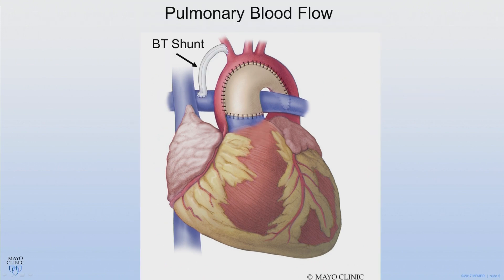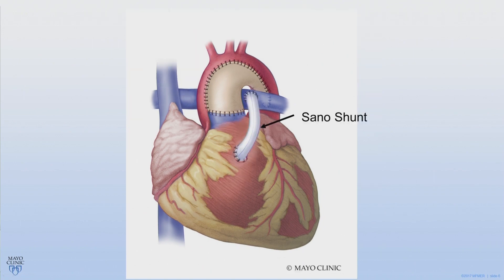This is done with one of two shunts. Shown here is a BT shunt, in which the pulmonary arteries receive blood from the aorta. This is a Sano shunt, also called a right ventricle to pulmonary artery shunt, in which the blood comes from the ventricle into the pulmonary arteries. The choice of which shunt depends on the specifics of the baby's anatomy.